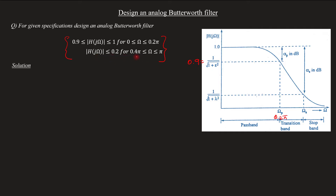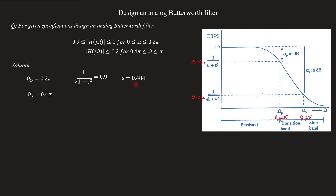Next, this is the stopband frequency. The stopband frequency is in the range 0.4π to π. The magnitude value in the stopband is less than or equal to 0.2. So the stopband frequency starts at 0.4π and the magnitude there is less than or equal to 0.2.